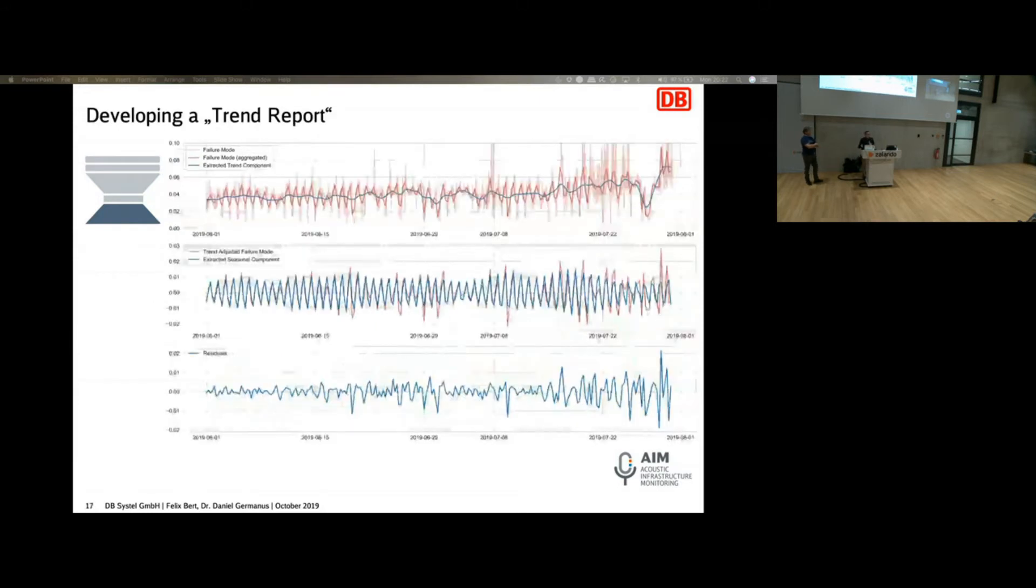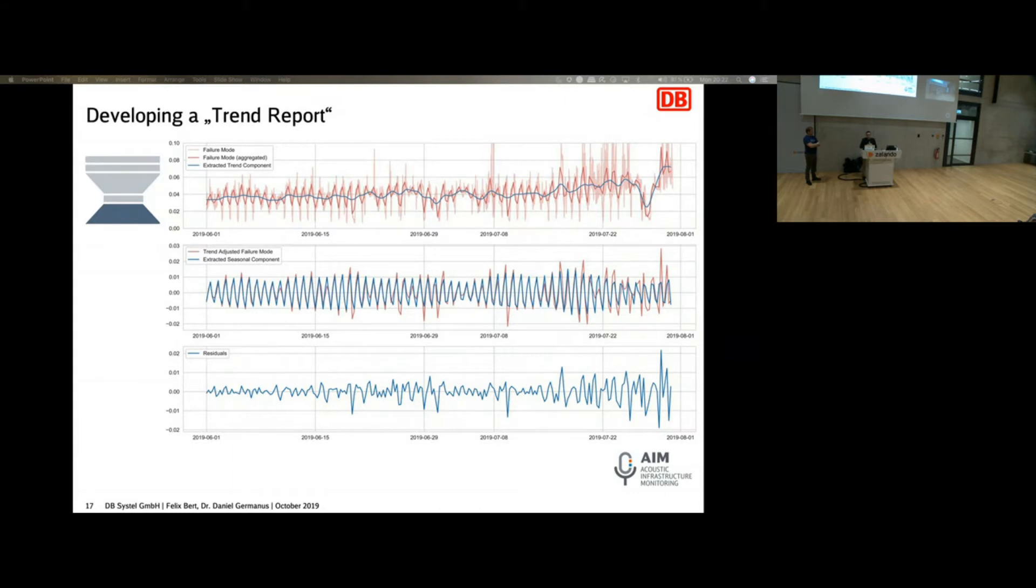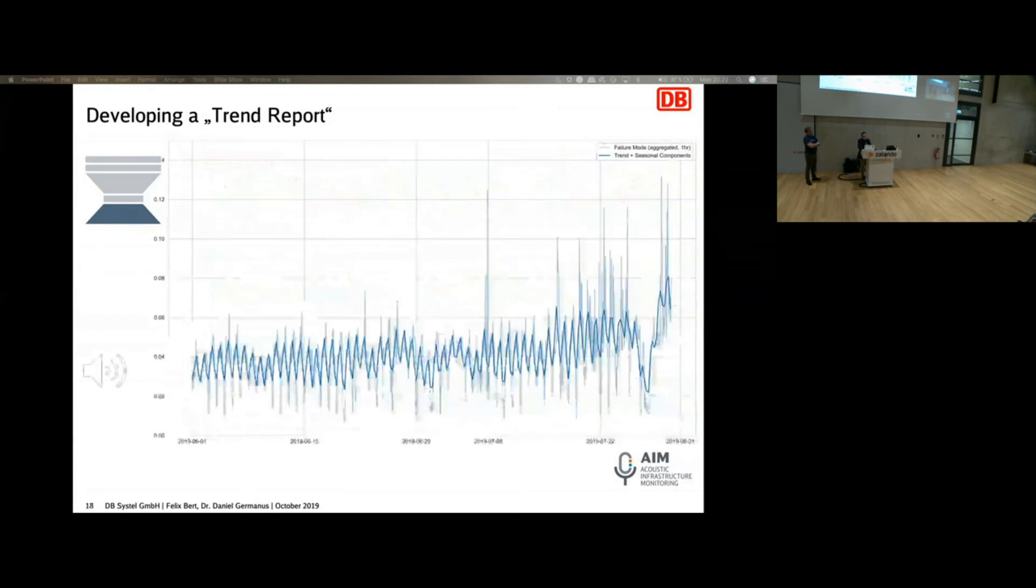Of course, we want to automate this. So we developed this kind of feature which we could call a trend report or something. We looked at different types of aggregation and applied a time series decomposition, which I have as an example here. It's typical trend seasonal components and error components.